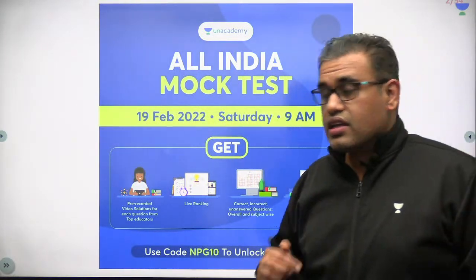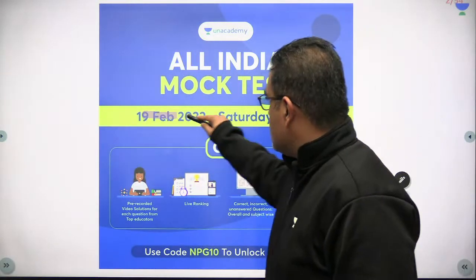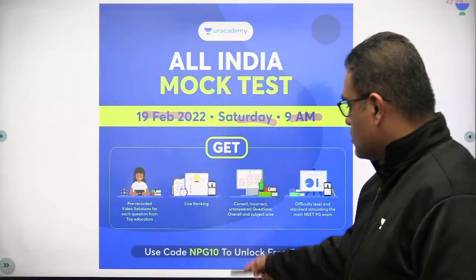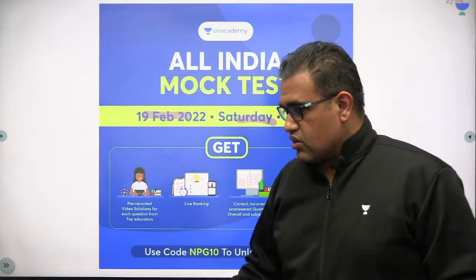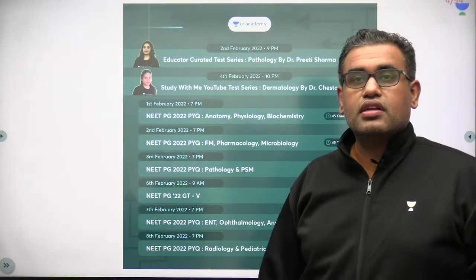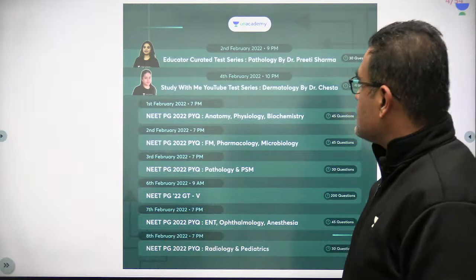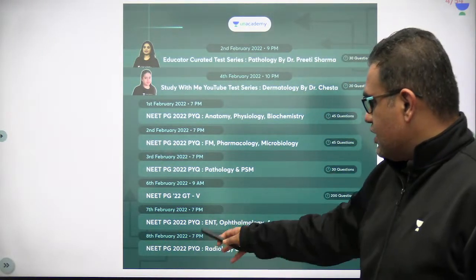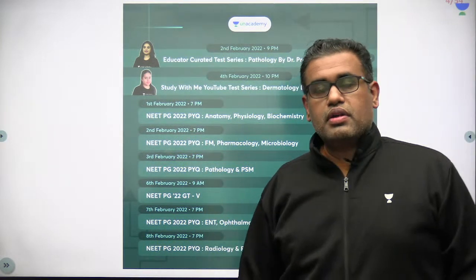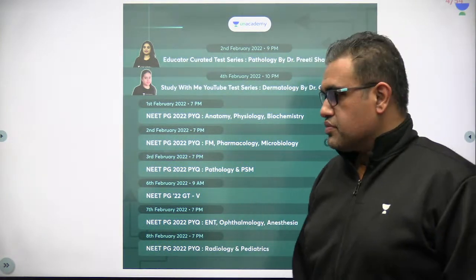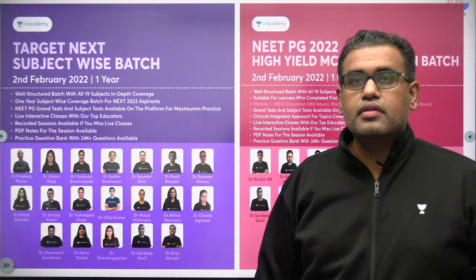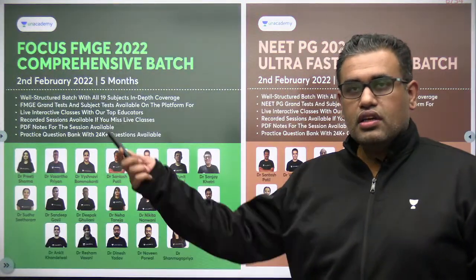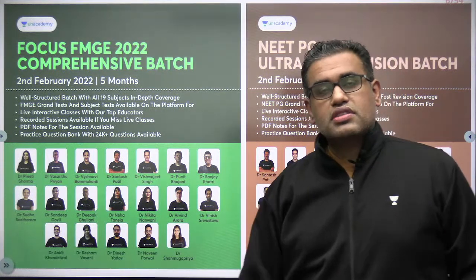Mark your calendars — 19th of February, Saturday, 9 in the morning, there is a mock test going on. You can use the code NPG10 to unlock the test. We also have a list of tests scheduled for the month of February covering all subjects. Till the 8th and 9th of February we will be completing the major subject-wise tests. We also have batches starting for FMG, NEET and the next PG exam in a day or two or already started.